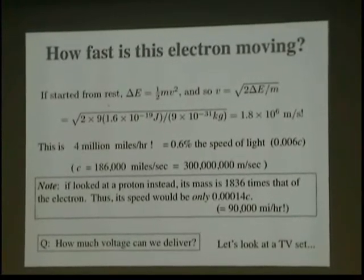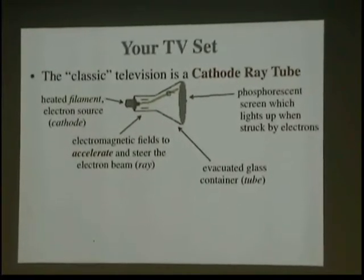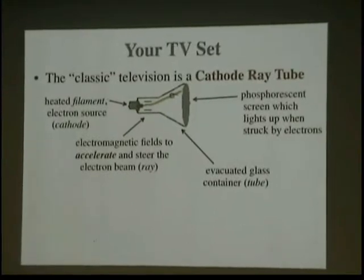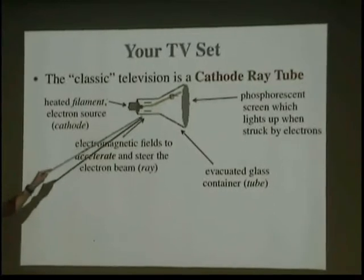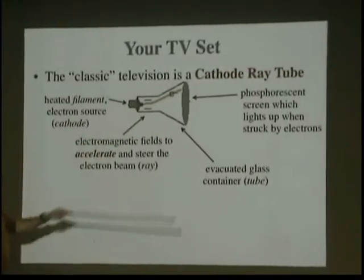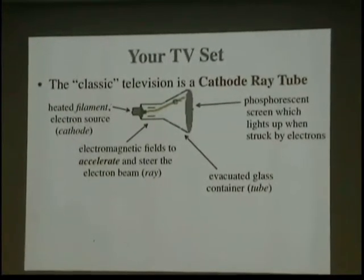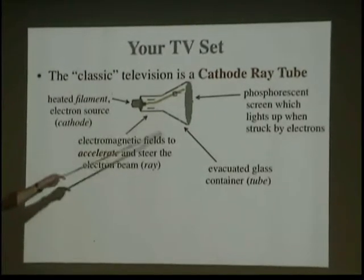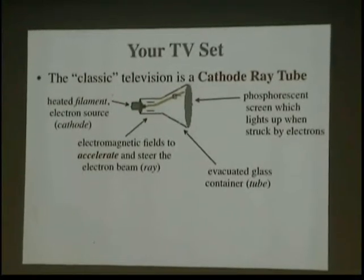Let's start with our TV set. How much voltage is available in a TV set? If you look at a classic TV, or a cathode ray tube, you've got a filament in the back that is heated up. Some electrons are emitted, something called a cathode. And then, electromagnetic fields accelerate the particles towards a phosphorescent screen and steer them so they get the place in the screen where you want them to hit. That's how, that's our accelerator. And then, we have an evacuated glass tube so they don't get scattered along the way. You want them to hit that screen where you send it.